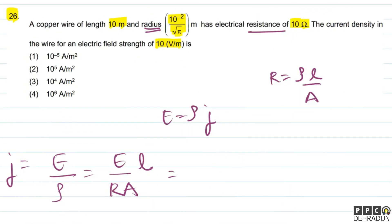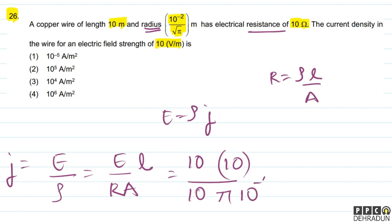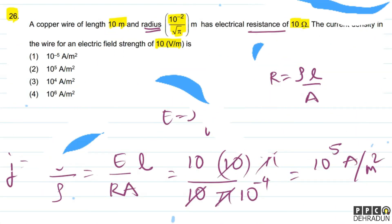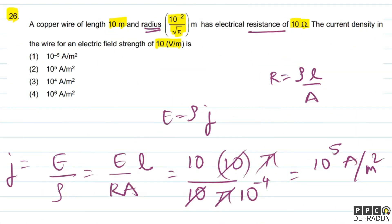Let's do the calculation. J equals E into L upon R into A. Resistance R is 10. Area = π r² = π into (10⁻²/√π)² = π into 10⁻⁴/π = 10⁻⁴. So 10 cancels with 10, π cancels with π, and 10⁻⁴ in the denominator gives 10⁴ in the numerator, making the answer 10⁵ ampere per meter square. So the answer is option number 2, that is 10 to the power 5 ampere per meter square.